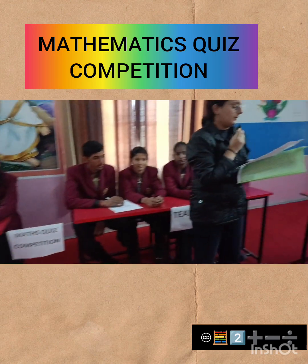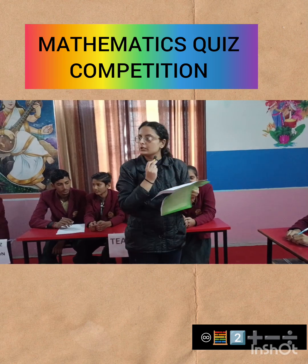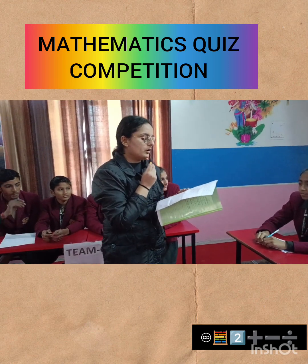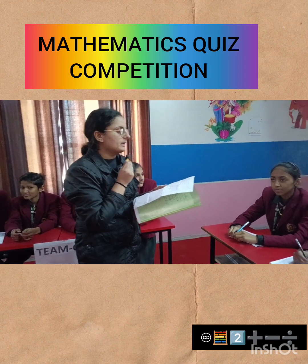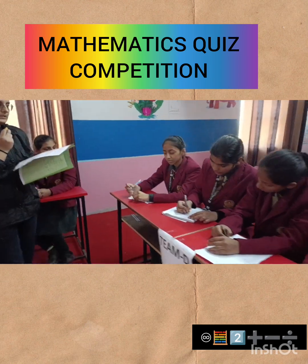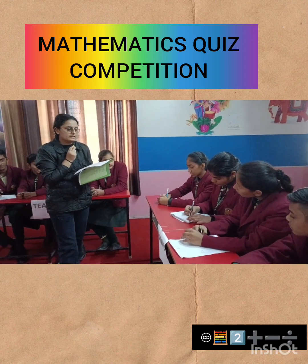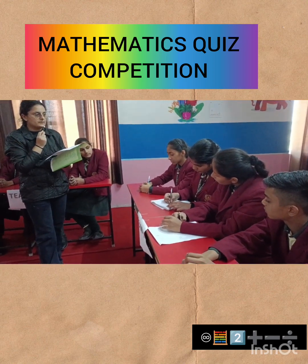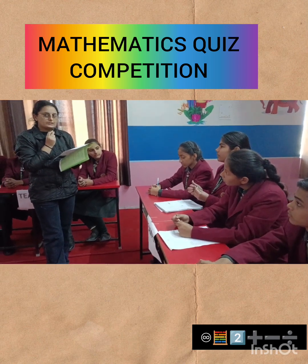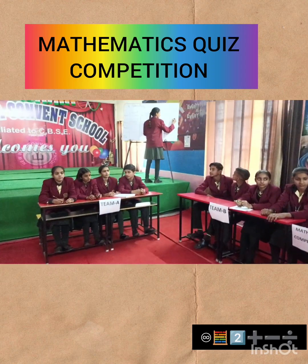Next question for Team D — last question for this round: what is the sum of interior angles of a square? 360 degrees is the right answer — five marks to Team D.